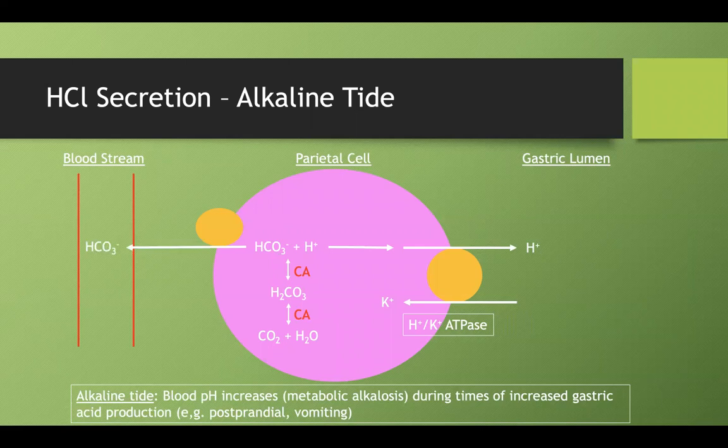After you eat, if you measured your blood pH, it would actually be a little bit higher. For every bicarbonate that enters the bloodstream, you can get chloride that comes into the cell and out as well. That's how you get HCl into your gastric lumen.